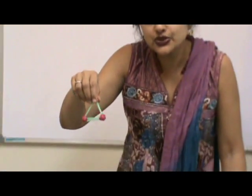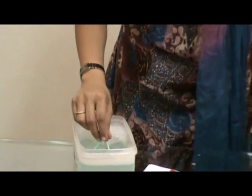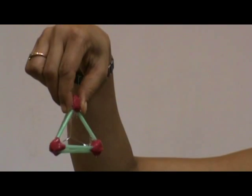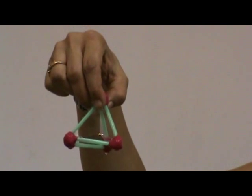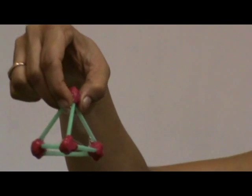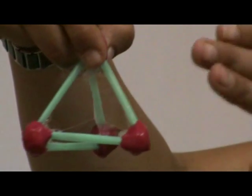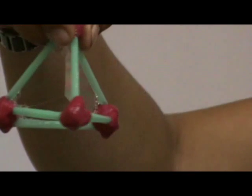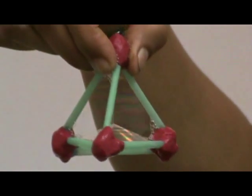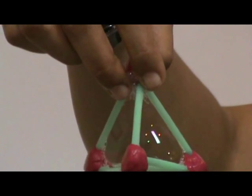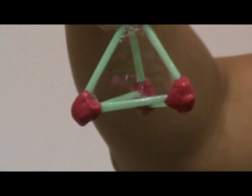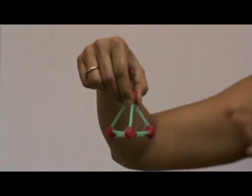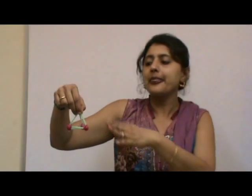This is a triangular pyramid, which I am going to teach you today. We will put it in the soapy solution to study its faces, vertices, and edges. You can see bubble formation on all sides, and there is even a depression formed inside. The straws are the edges where two faces meet, and the clay pieces are the vertices. So a triangular pyramid has four faces, six edges, and four vertices.